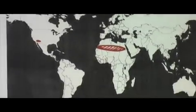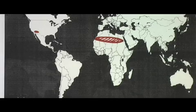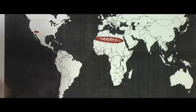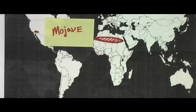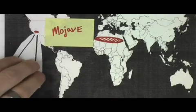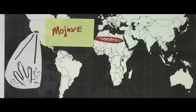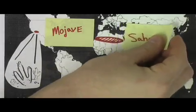A desert in North America, such as the Mojave, might contain an organism such as the cacti. And the African Sahara desert might contain euphorbs. Although these species look similar, they have different evolutionary pasts.